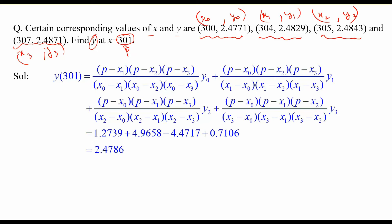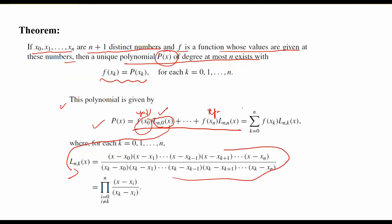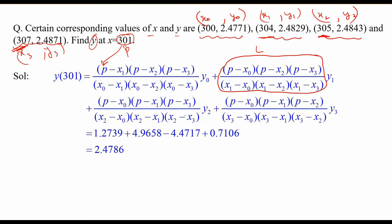We can do this by incorporating the Lagrange polynomial formula. Since we want the value at 301, we put that value in and write the Lagrange polynomial as: (p - x1)(p - x2)(p - x3) divided by the appropriate denominator, multiplied by y0, plus the corresponding L term multiplied by y1, and so on. These L terms are the Lagrange basis polynomials, and you multiply each by f(x0), f(x1), and so on. This is how you find the value at the unknown point using the Lagrange polynomial.